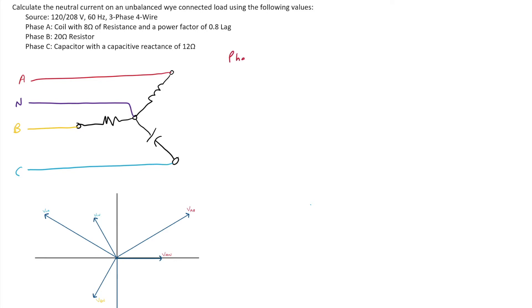So phase A. Phase A is our coil, and our coil has a resistance of 10 ohms and a power factor of 0.8 lag. Well, what that tells me is that is a coil that has resistance and inductive reactants, which all coils do. So phase A really has its own little impedance diagram that we can draw out. We know we have 8 ohms of resistance and a power factor of 0.8.